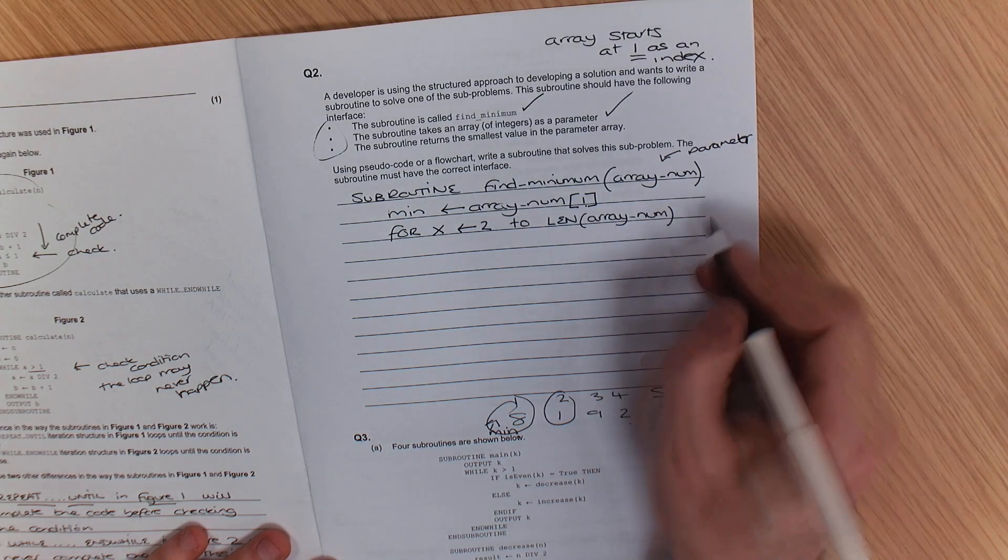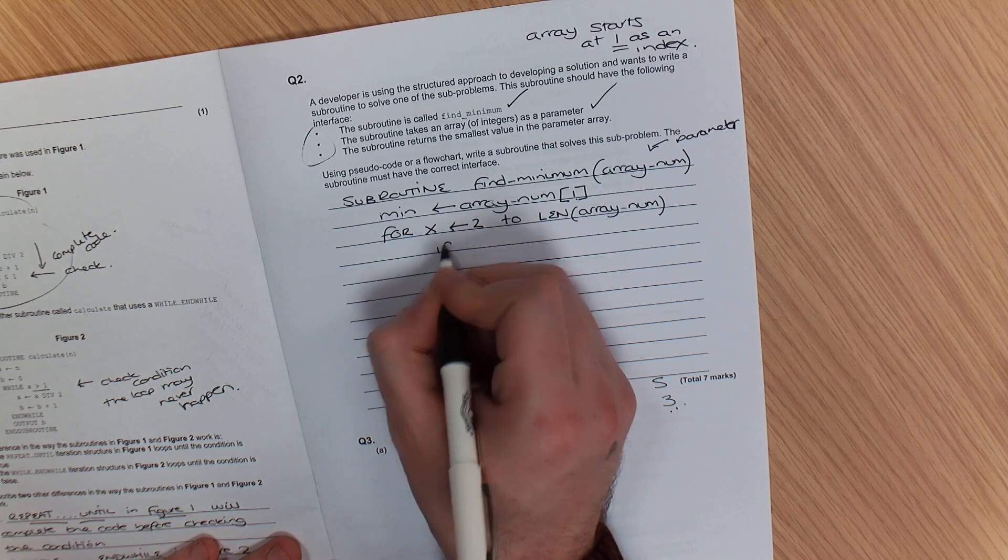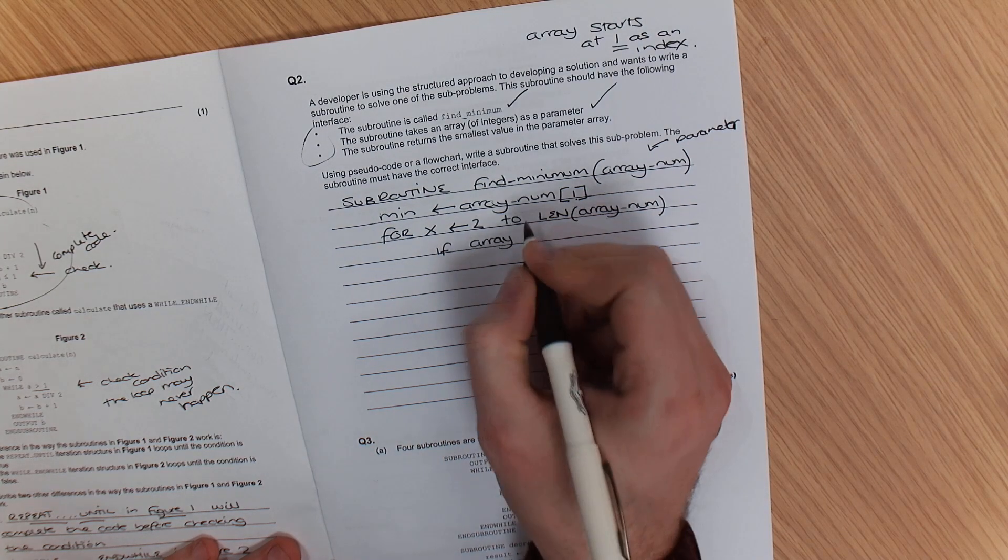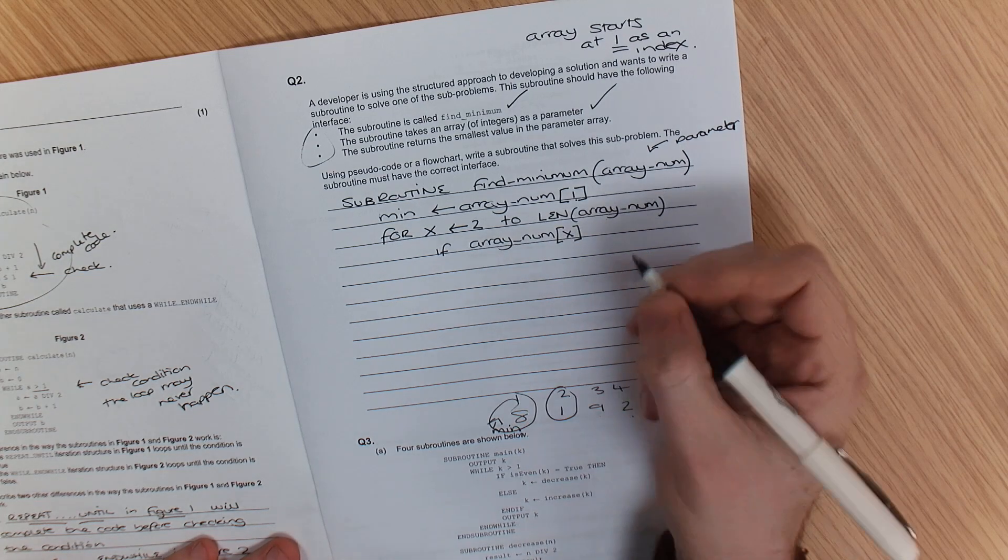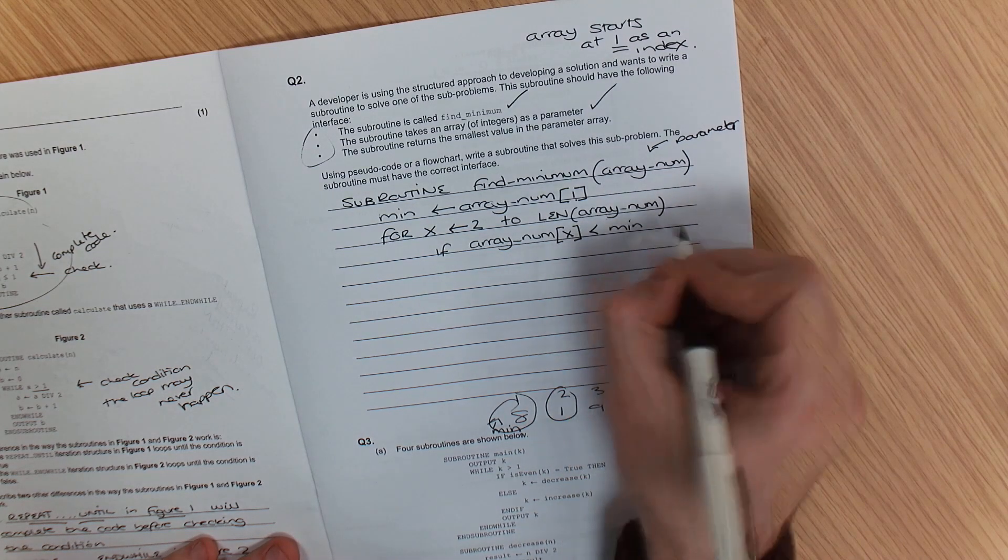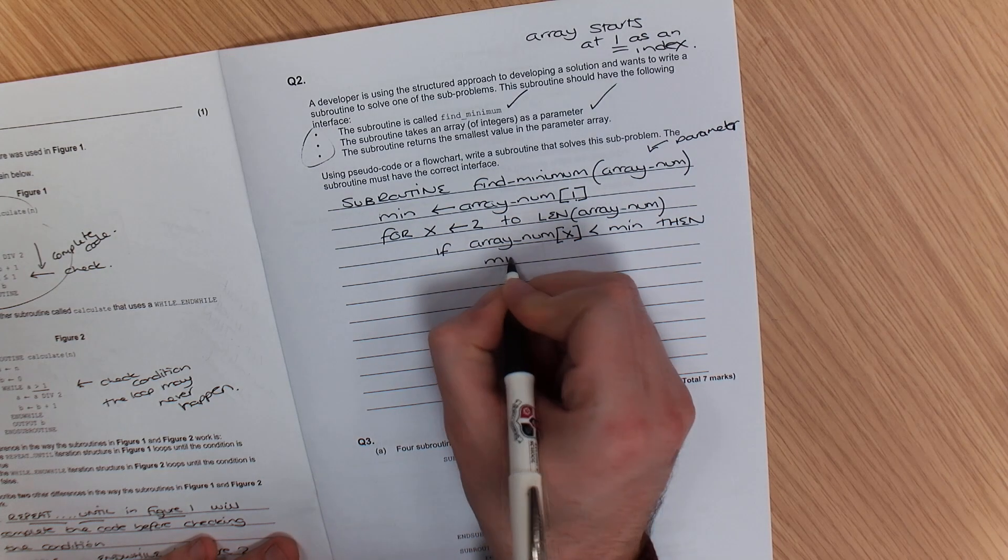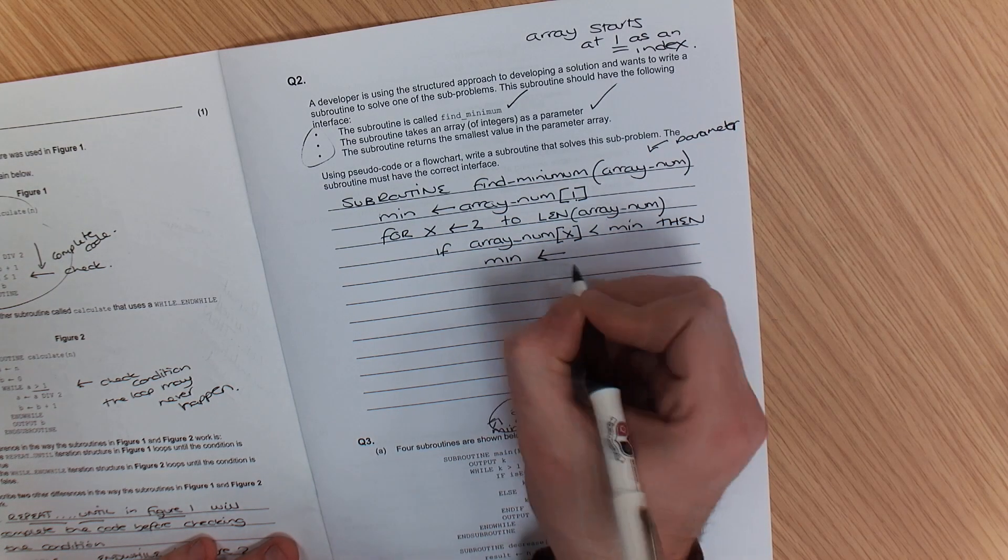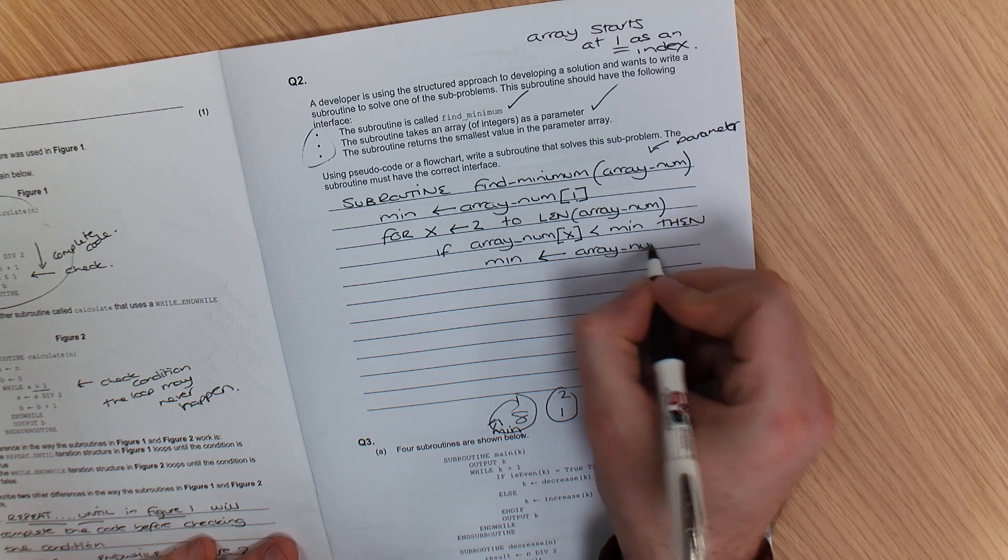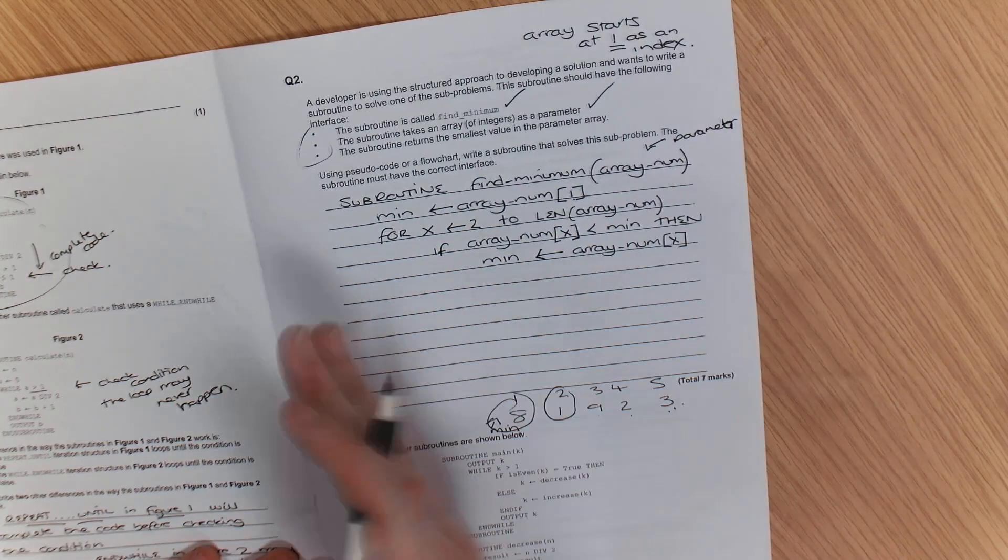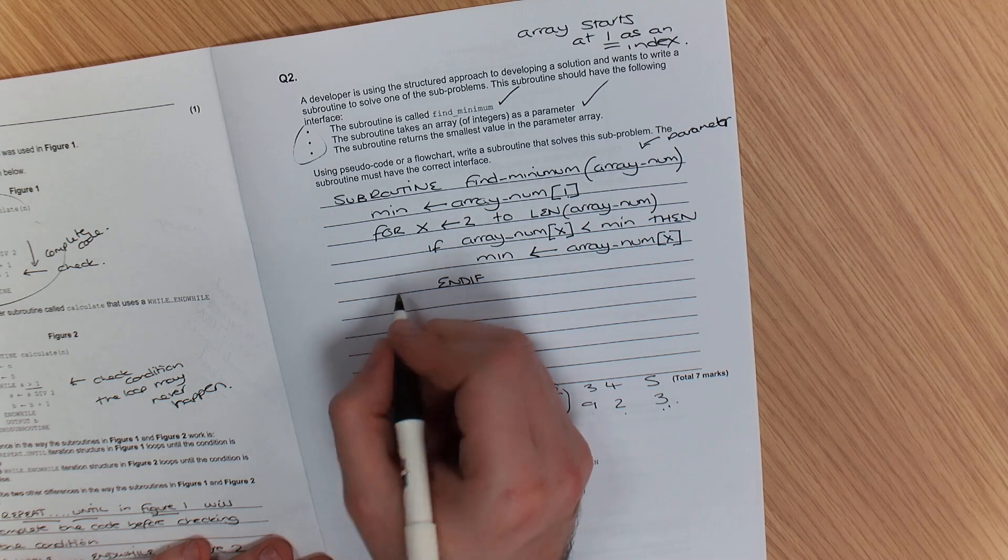Now if we started at zero, we would need to subtract one from that. But we're just going to carry on for a minute. If, array underscore num x is less than min, then what we're going to do is replace the value of min. So min now is assigned. So look at the arrow that I'm using. Min is now assigned array underscore num x. So it's the process of swapping things around. I'm going to end that if. I'm going to end my for.